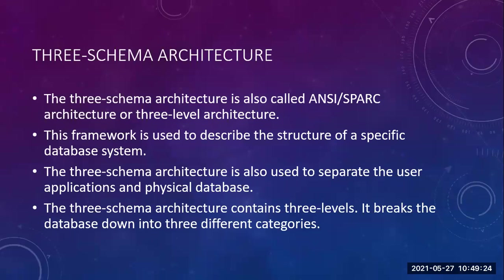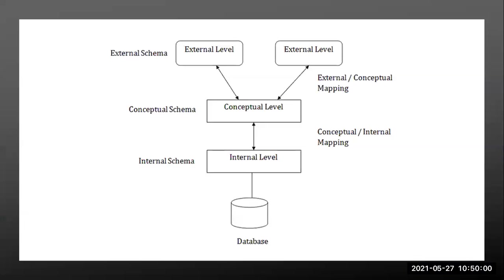Three-schema architecture contains three levels and it breaks the database down into three different categories. The three levels are: external level, conceptual level, and internal level. Let me change the slide — have a look for 20 seconds.